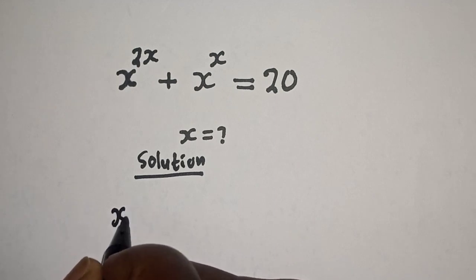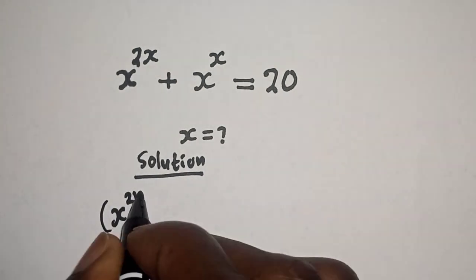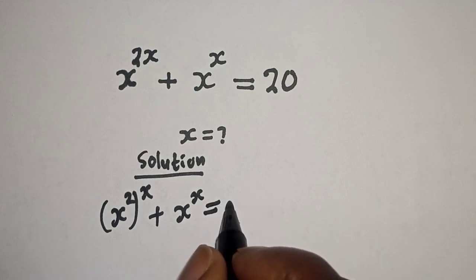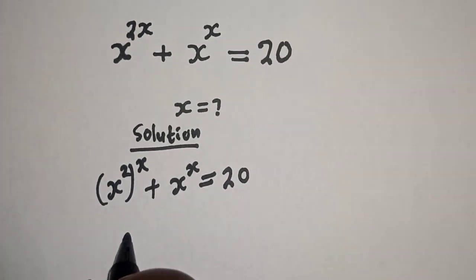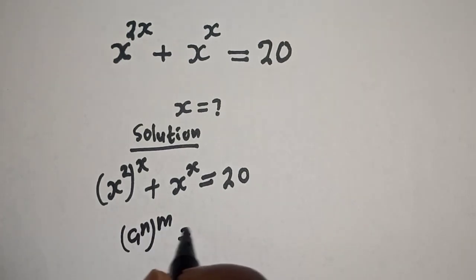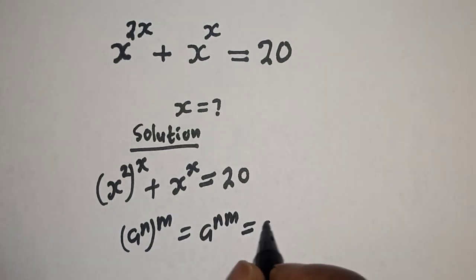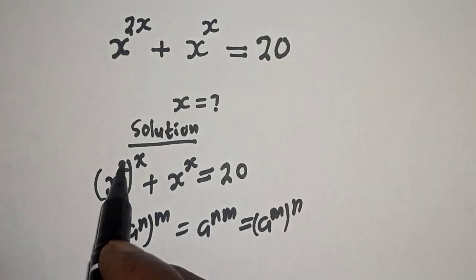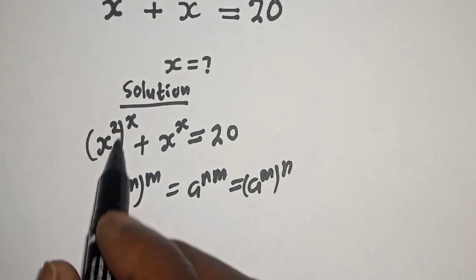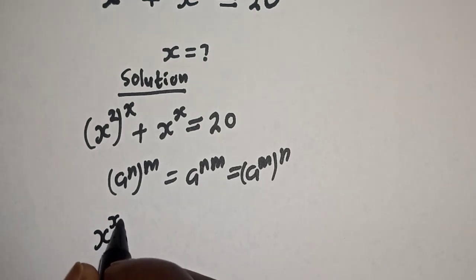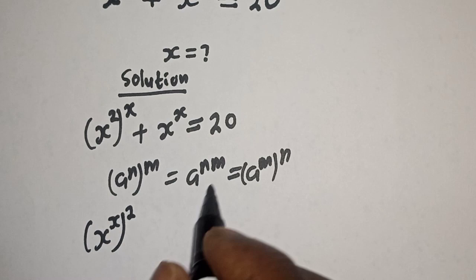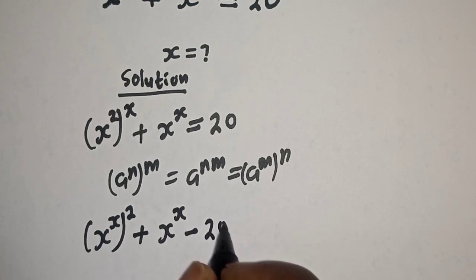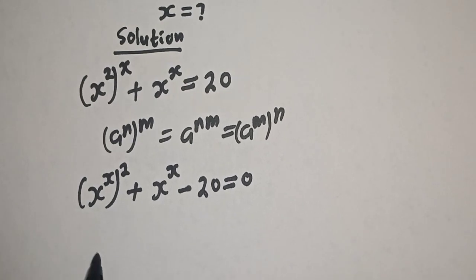Solution: we have s raised to power 2s plus s raised to power s is equal to 20. Take note that if you have a raised to power n, to the power of m, this equals a raised to power n×m. Using this identity, s raised to power 2s can be written as s raised to power s, all squared. So we have s raised to power s, quantity squared, plus s raised to power s minus 20 is equal to zero.